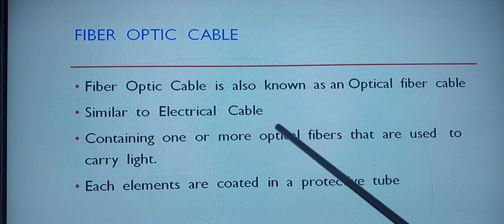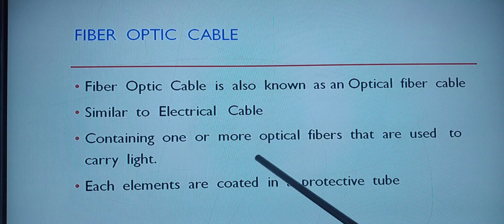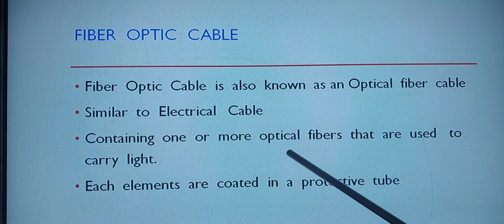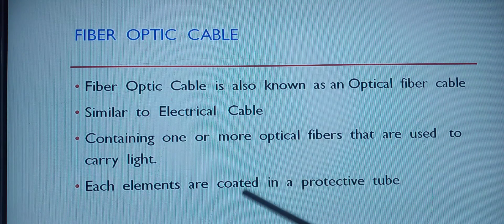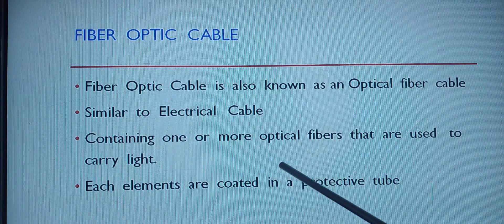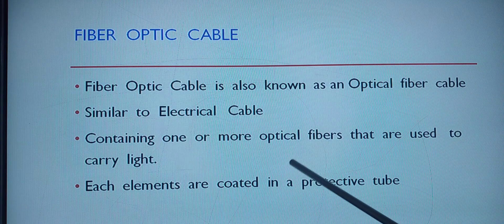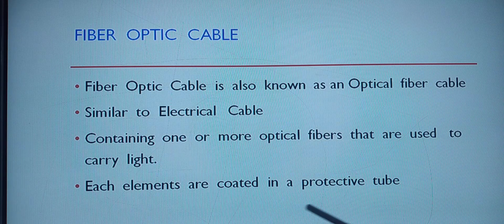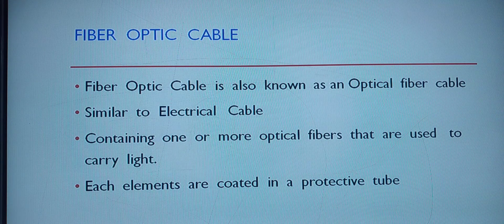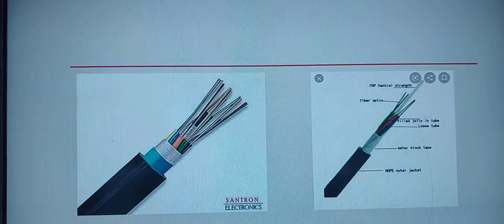Fiber optic cable has one or more optical fibers that are used to carry light. Each element is coated in a protective tube. Looking at the figure, you can see each small cable is your fiber optic. There is an outer jacket and a water block layer. Water should not enter inside the cable, since this cable passes through many areas — it will be underground.